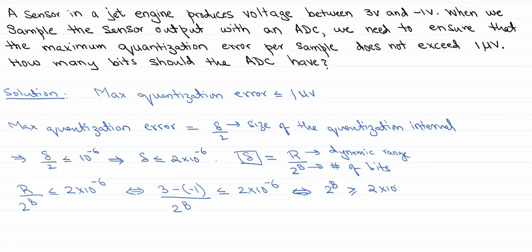Now all we have to do is take logarithm on both sides. So log base 2 of 2 times 10 to the 6, that is 20.93, and this is greater than or equal to b.